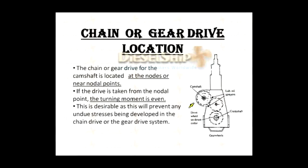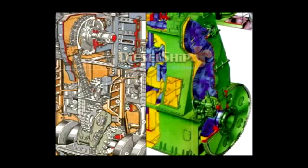Let's now see where the chain or gear drive is located. Sulzer engines have the gear drive and B&W have the chain drive. Both drives — chain or gear — should be located at nodes or near-nodal points, not at anti-nodes. If the drive is taken from the nodal point, the turning moment is even and there are no undue stresses on the drive gears. This is the pictorial representation of the B&W chain system and the Sulzer gear drive system.